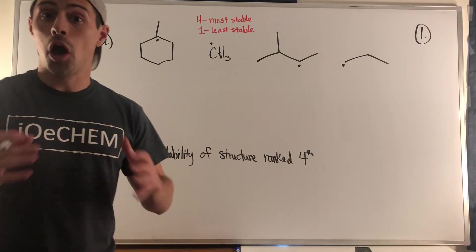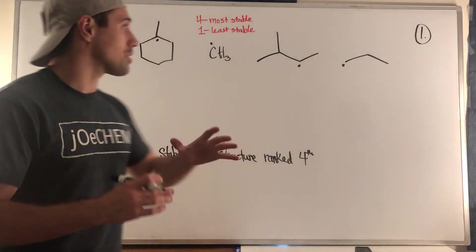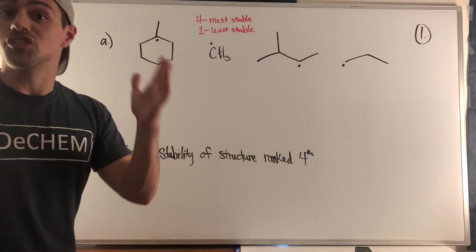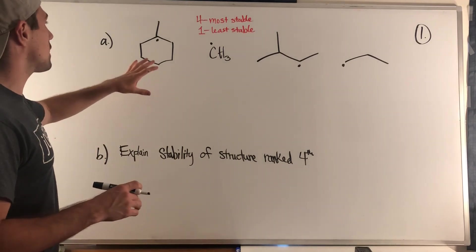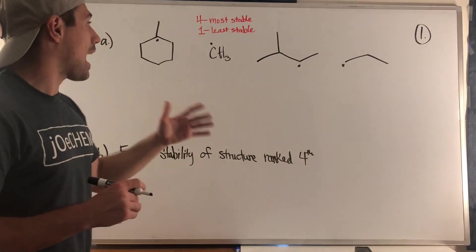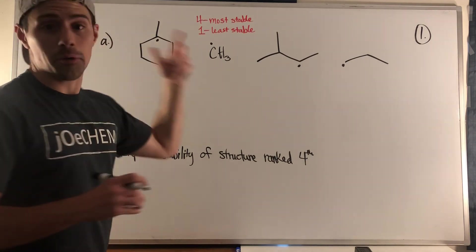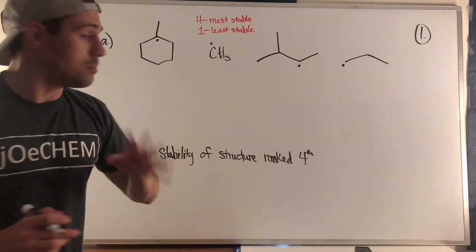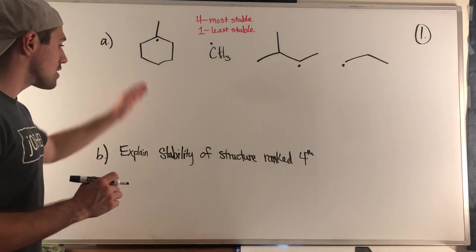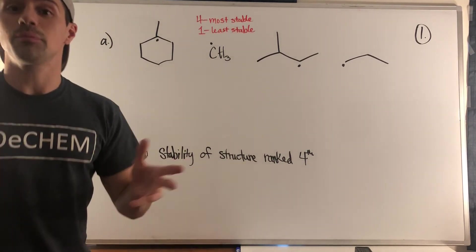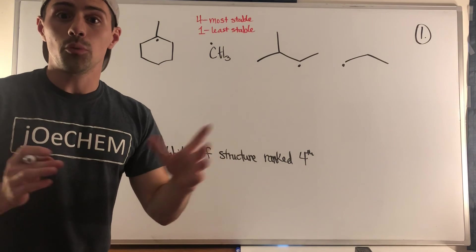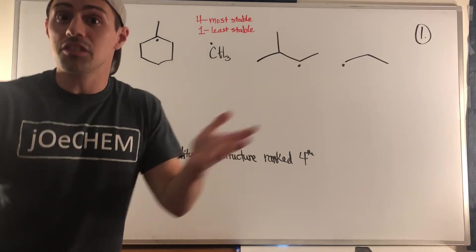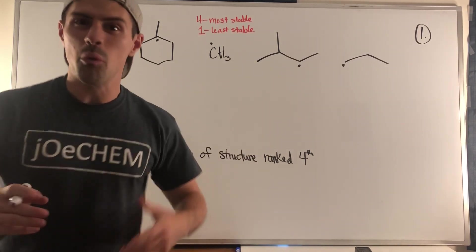Let's do it. Okay gang, in problem one, we are given two things to do. We have to rank these radicals—a radical being an atom with an unpaired electron—in terms of stability, one being the least stable, four being the most. And then in the second part of problem one, the most stable structure, the structure ranked fourth, we need to explain why. Explain the stability. What makes it tick?